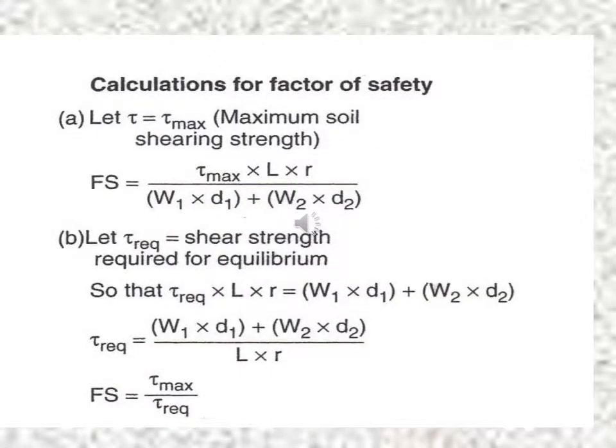The moment causing sliding is W1 times D1 plus W2 times D2, and the moment resisting sliding is tau times L times R, where L is the total arc length and R is the radius. Let tau_max be the maximum shearing strength; then FS equals tau_max times L times R divided by (W1 D1 plus W2 D2). The mobilized shear strength must exceed the disturbing shear force for FS to be greater than one.